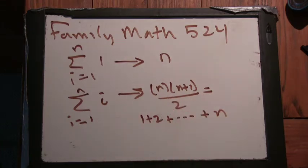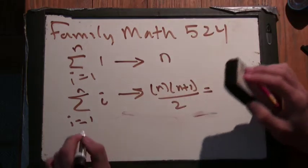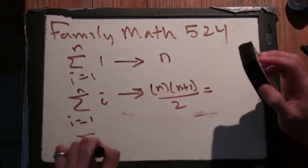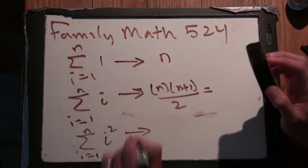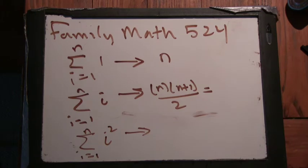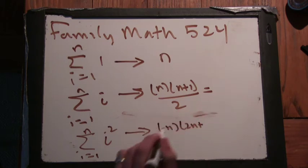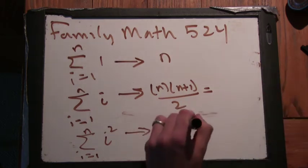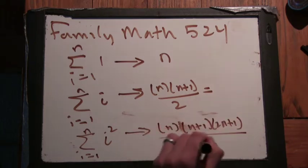And that equals n times n plus 1 over 2. And what if I change this to i squared? And it goes to i equals 1 to n of i squared. What would that be? So then it's n times n plus 1 times 2n plus 1 all over 6. And right now these are just formulas that you learned about.